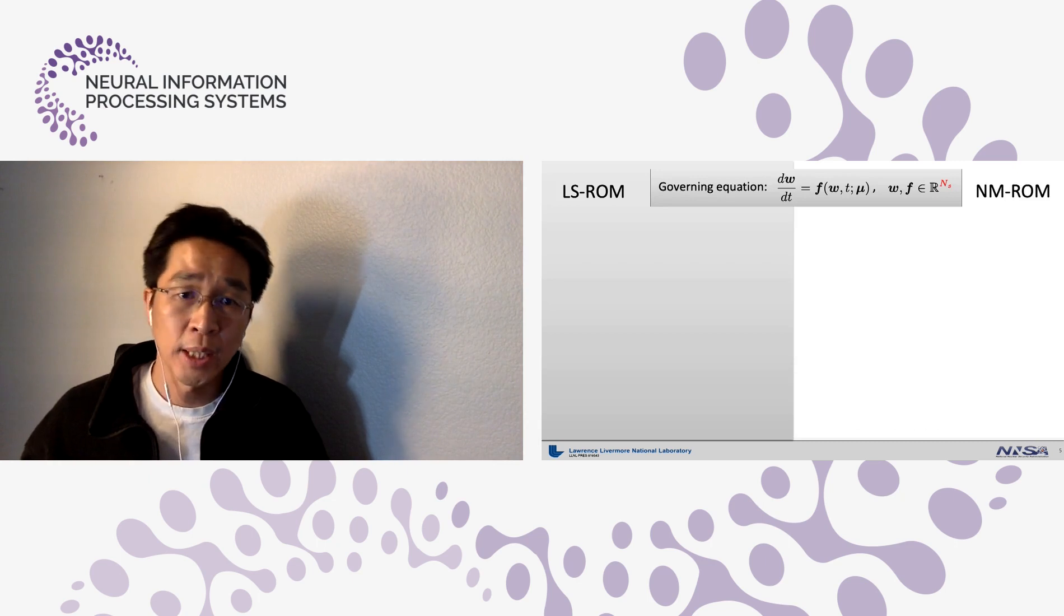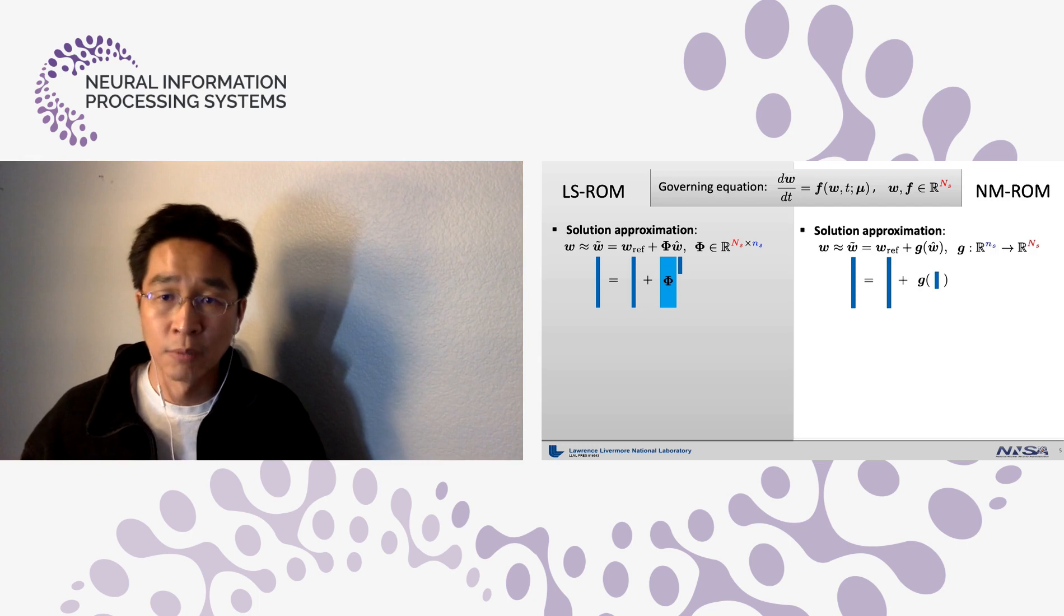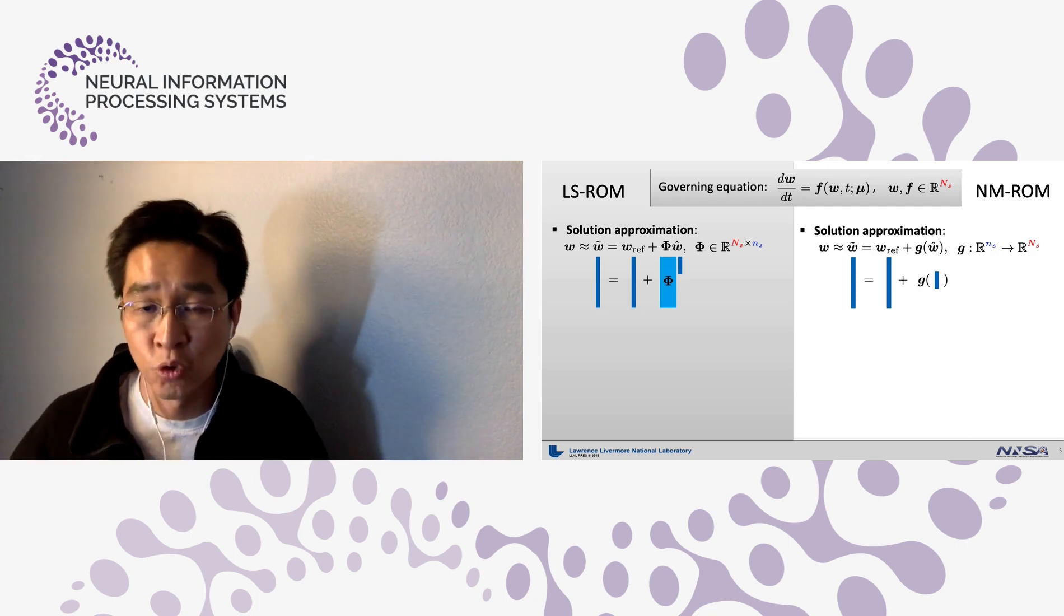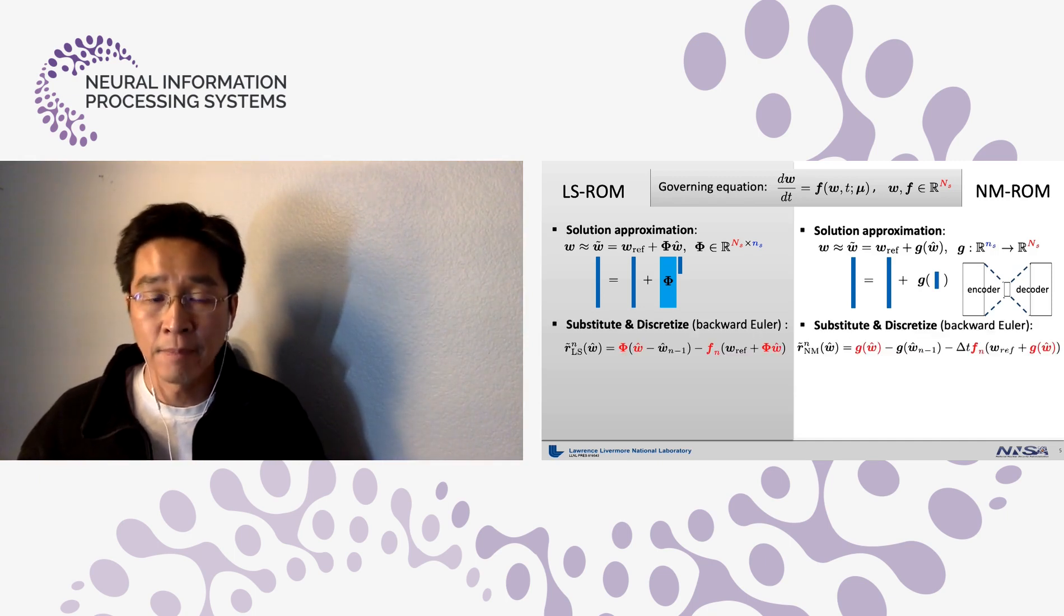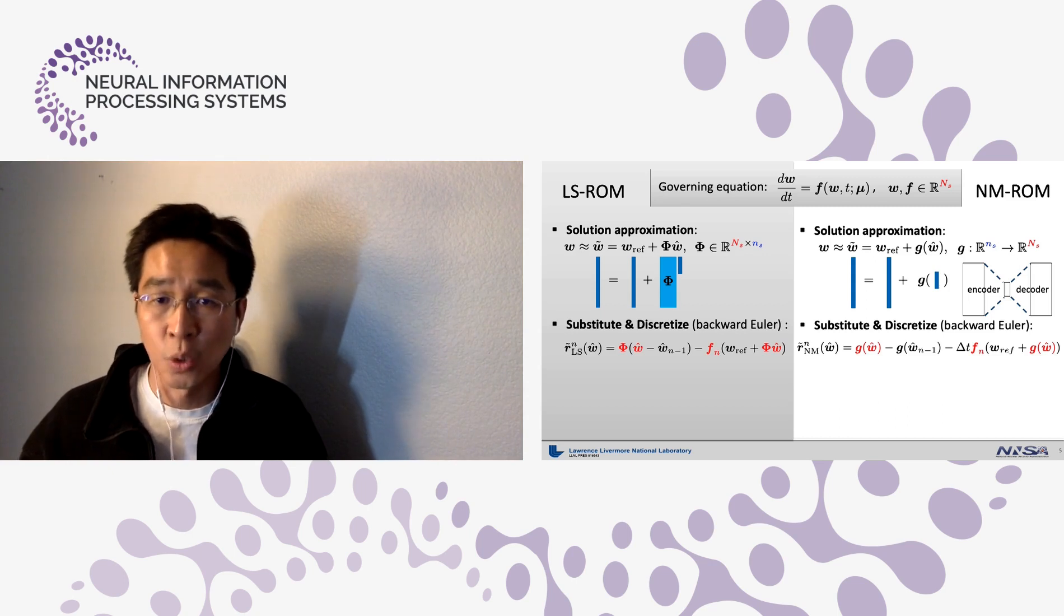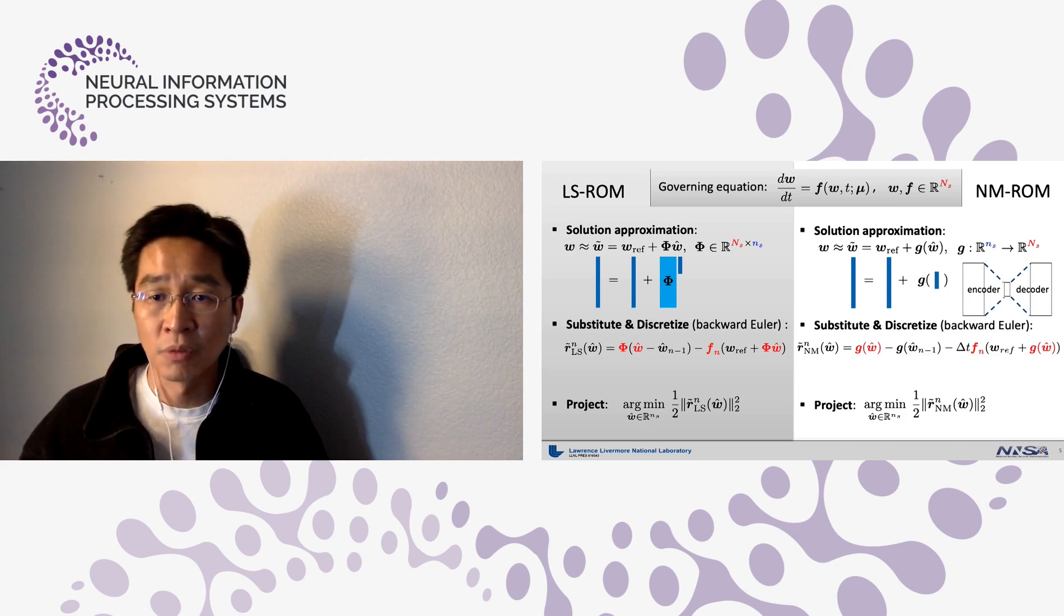To explain what NMROM is, I will compare NMROM with LSROM step-by-step. First of all, LSROM uses linear subspace solution representation, while NMROM uses a nonlinear manifold representation using nonlinear map G. We use autoencoder to obtain the nonlinear map. Then both LSROM and NMROM substitute these solution representations into the governing equations. Since these are over-determined systems, we close them by minimizing the norm of the residuals.